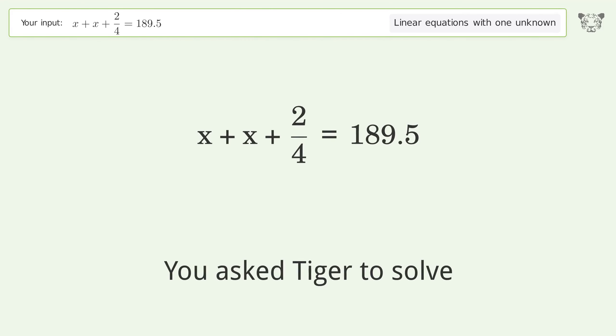You ask Tiger to solve this, deals with linear equations with one unknown. The final result is x equals 189 over 2.